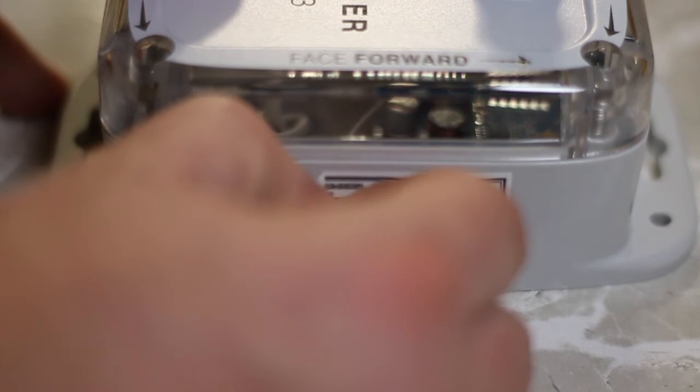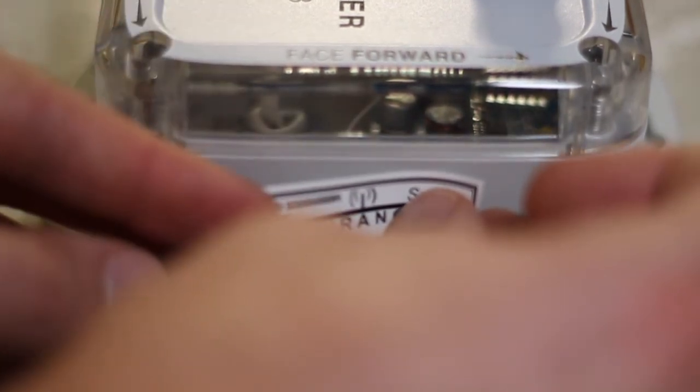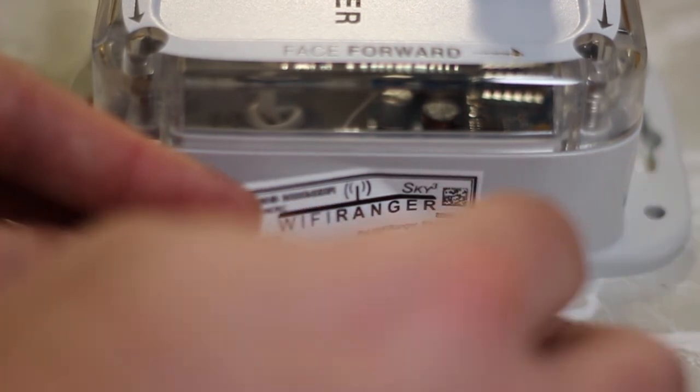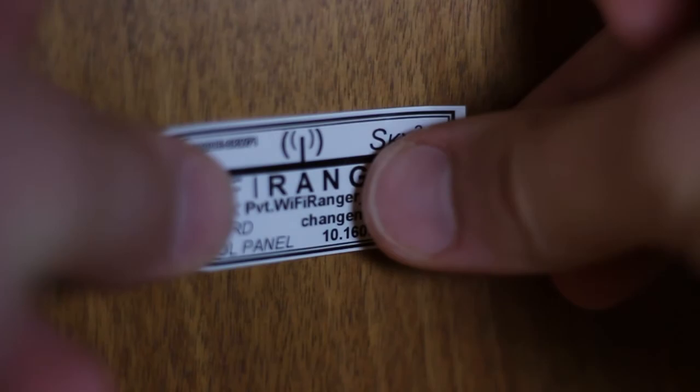Remove the old label from the outside of the Sky 3 case and replace it with the new label. Another label is included with the new Sky 3 board. This goes underneath the power switch of the Sky 3.